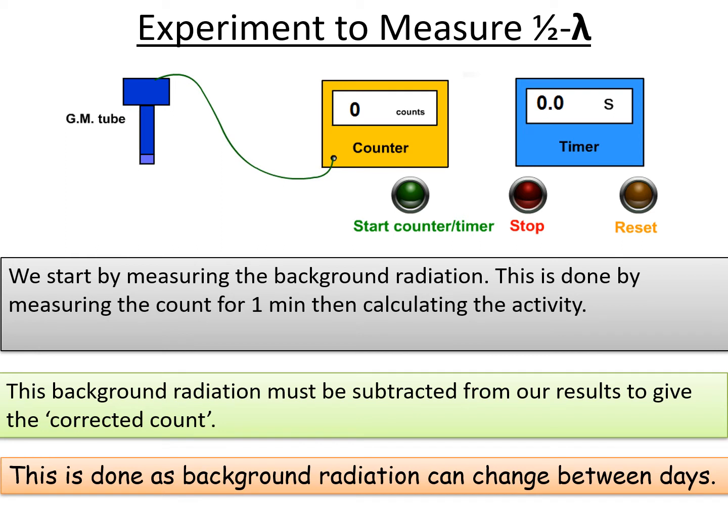because remember radiation is random, so background radiation can change between days. What that means is you could measure the background radiation today and if you made the same measurement at the same time the following day you could get a totally different value of the background radiation.